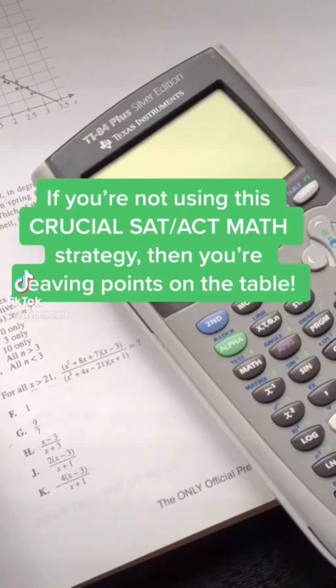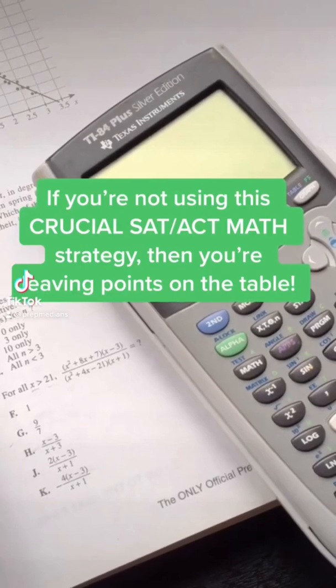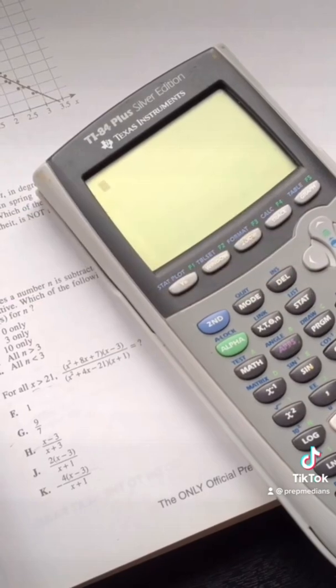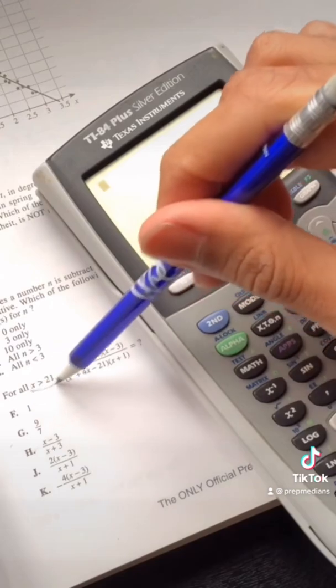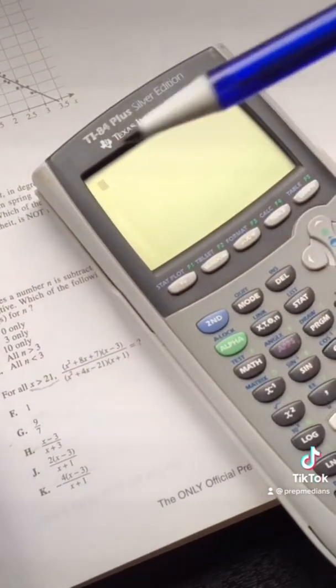Let's say that you have factoring issues, that you've got a little bit of a fear factor. That's all right. You may have been paying attention and realizing that I'm a big fan of plugging in numbers, and that's exactly what we're going to do on a question like this. Now look at this. It says for all x greater than 21. Well, let's use 22. That's greater than 21.